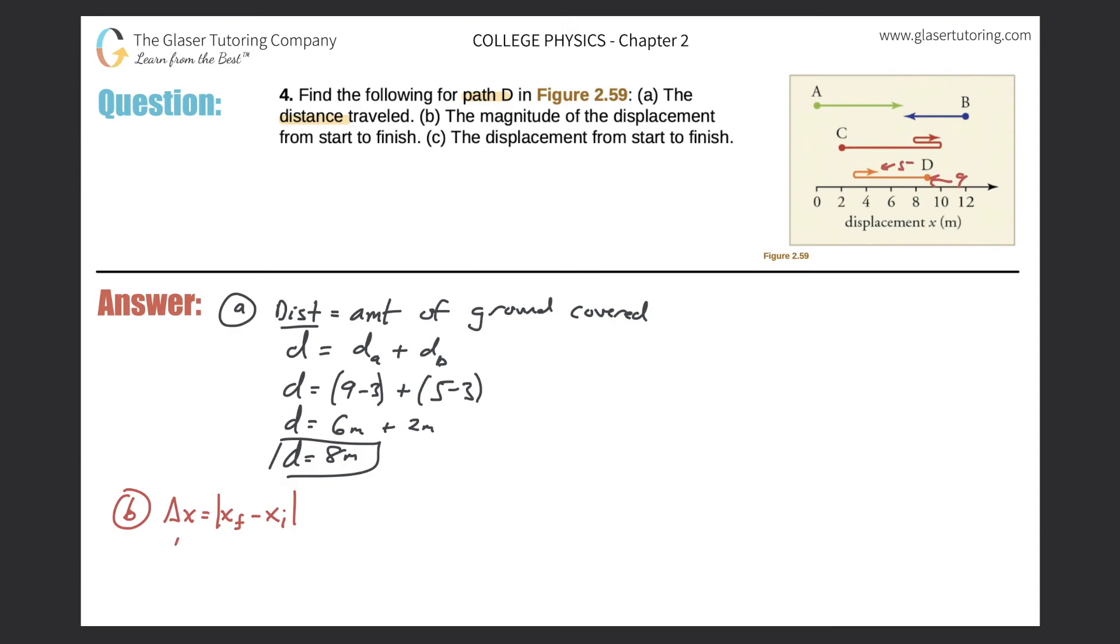So let's plug in those numbers. The final displacement value is 5 meters, the initial was 9 meters, and I'm going to take the absolute value. So when I do the math here, 5 minus 9 is negative 4. When I take the absolute value, the negative just becomes a positive, so it becomes 4 meters.